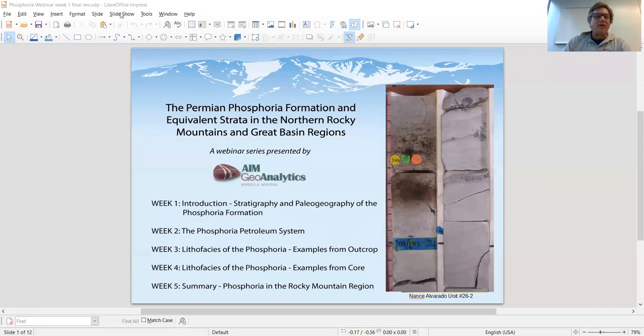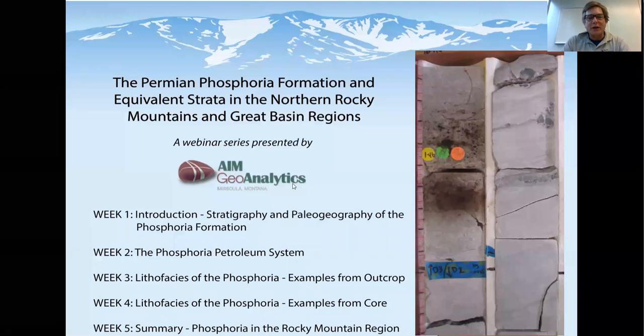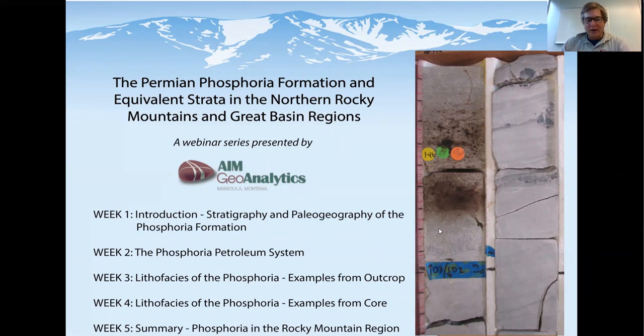The official title of my presentation is the Permian Phosphoria Formation and Equivalent Strata in the Northern Rockies and Great Basin Regions. On the right, you see a small section of rock core that's been cut from the phosphoria in the Bighorn Basin of Wyoming. The core shows a variety of lithofacies, including some ripple laminated packstone, locally some chert nodules, and a more massive section that shows moldic porosity filled with liquid hydrocarbons.